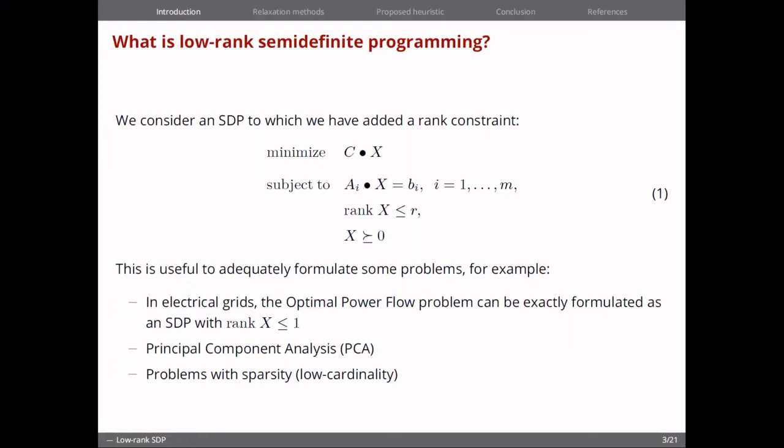Let's start with the introduction. What is low-rank semidefinite programming? If we consider an SDP in the classic form that it was in class, which is a linear objective function and set of linear equality constraints and positive semi-definiteness, and we add a rank constraint, which can be an equality rank constraint or an upper bound rank constraint, which is what we're seeing here. This is low-rank semidefinite programming.